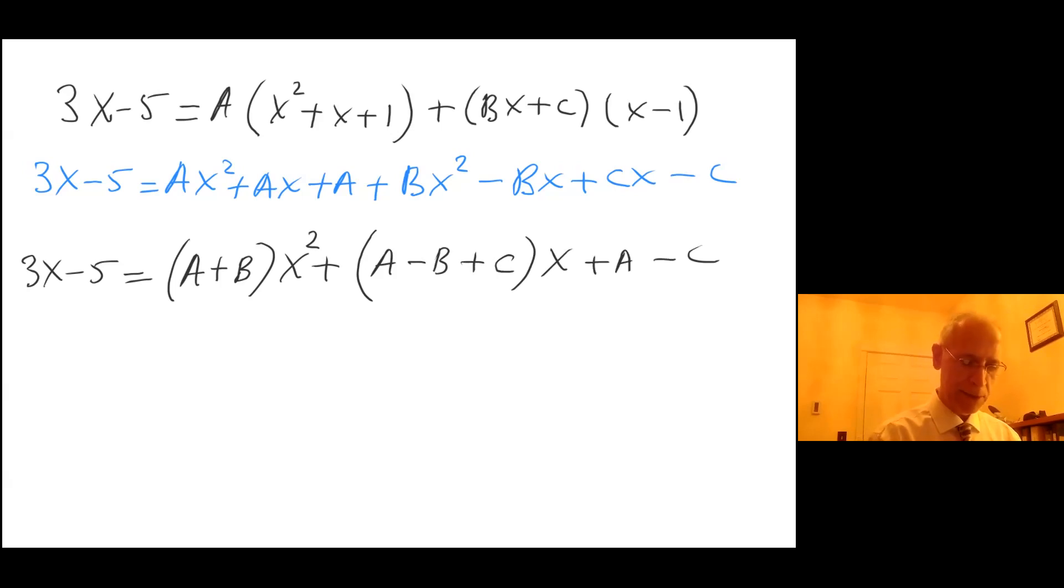Now look at this. This equal sign here demands that the coefficients on the left hand side must equal the coefficients on the right hand side. I don't have any x squared on the left, so A plus B must equal 0. A minus B plus C must equal 3, the coefficient of x.